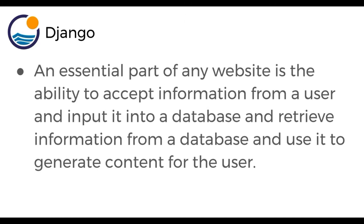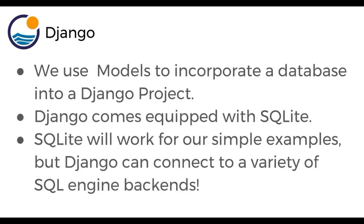An essential part of any website is the ability to accept information from a user and input it into a database, and then later on retrieve information from a database and use it to generate content for the user. We use models to incorporate a database into a Django project. And Django comes equipped with SQLite, which is a SQL engine. SQLite will work with us for our simple examples — we won't be doing any huge websites. But Django can also connect to a variety of SQL engine backends such as PostgreSQL and MySQL — all you have to do is just switch out the actual engine.